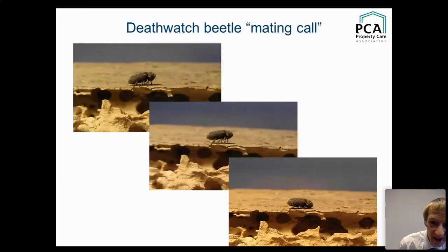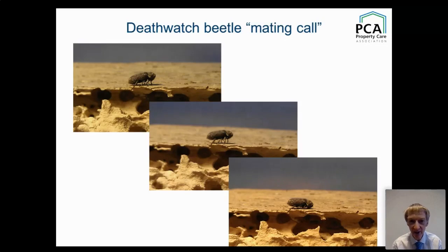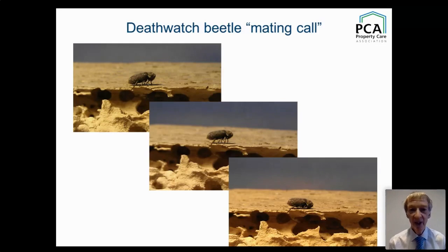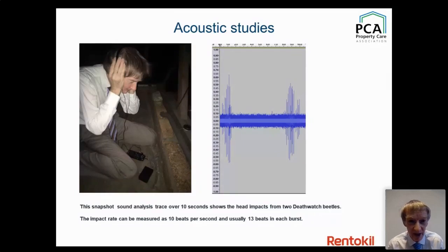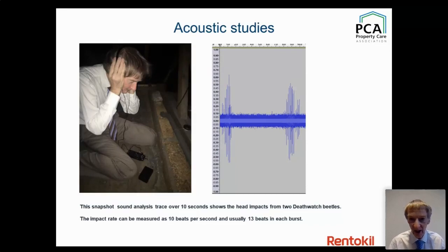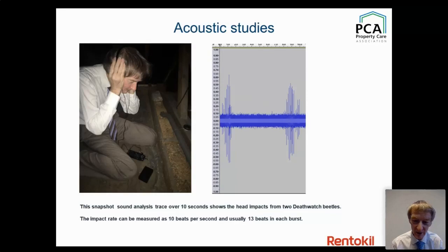Death Watch beetles have a mating call: they rise up on their legs, bring the head down on the frons, and headbang straight onto the timber — at 10 beats per second. Using a special microphone, the sonogram shows actual hits in bursts of about 13 beats. Depending on whether they're getting an answer back from a mate, that determines how frequently they headbang.